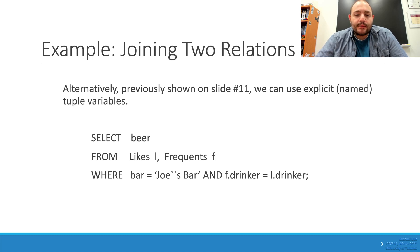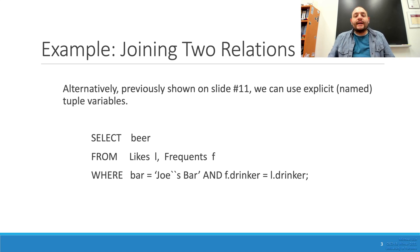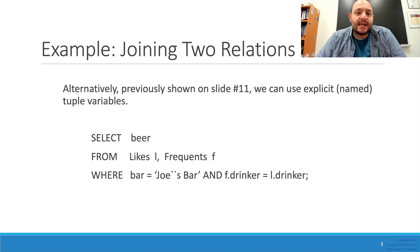My favorite part about using a short form — assigning a variable to a table — is that I can actually assign multiple variables to the same table name. For example, I could have frequents F1, frequents F2, frequents F3. That allows me to use the frequents table multiple times, which comes in handy when we start talking about sub-querying or nested queries.